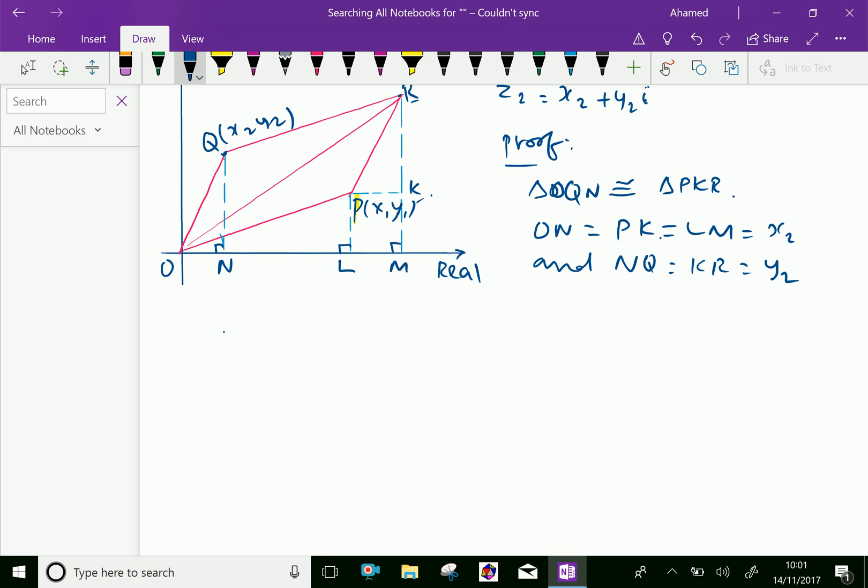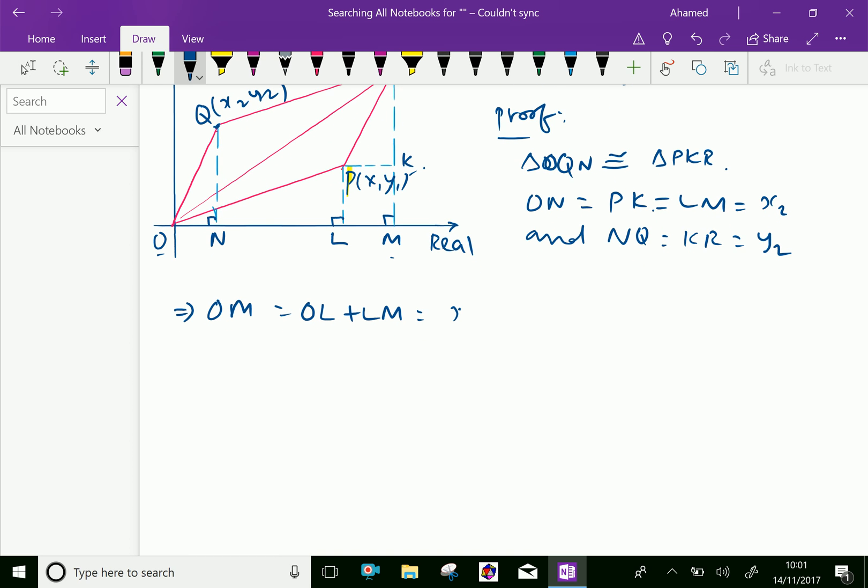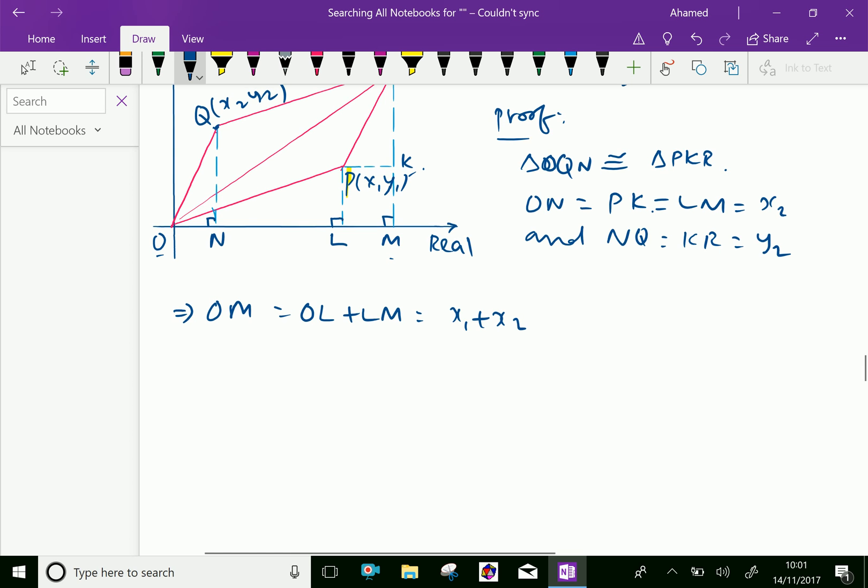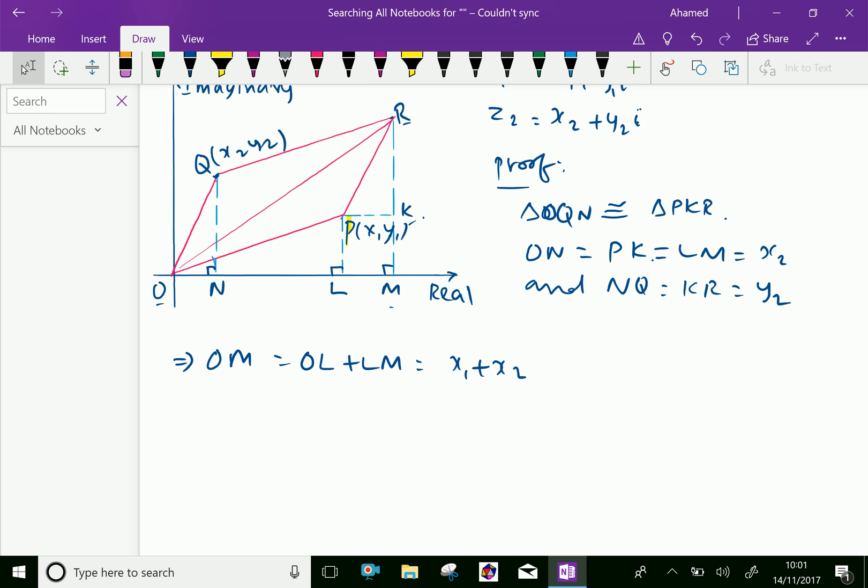We can say OM equals OL plus LM, which equals x₁ plus x₂, because OL is x₁ and LM is x₂.